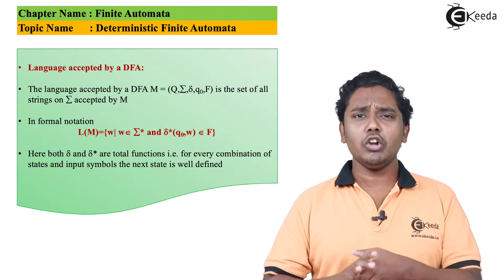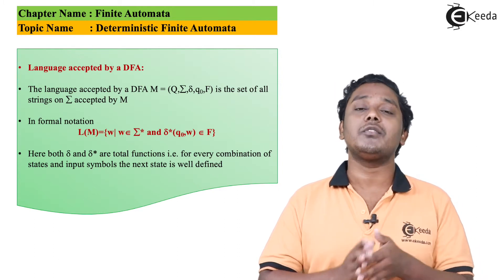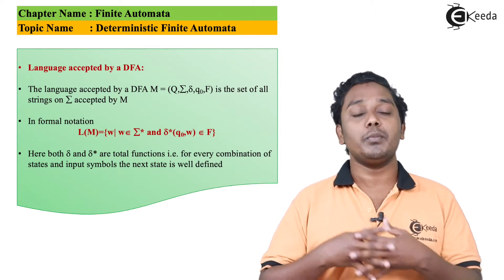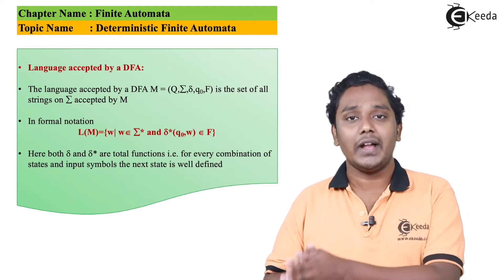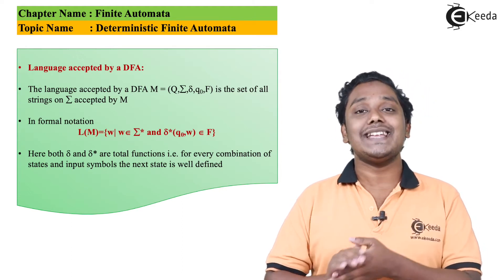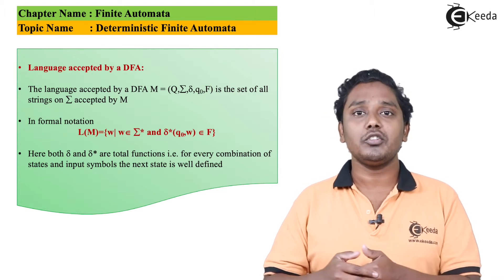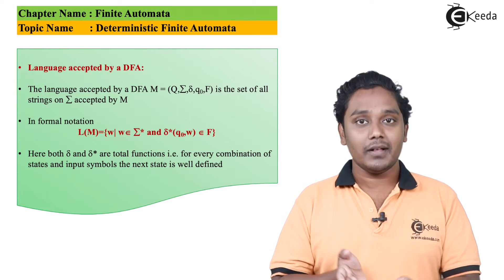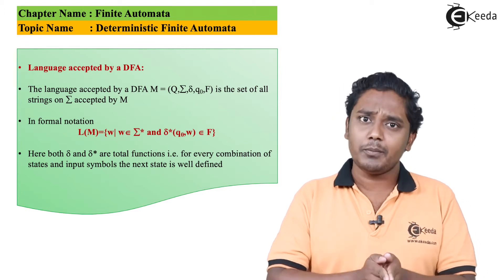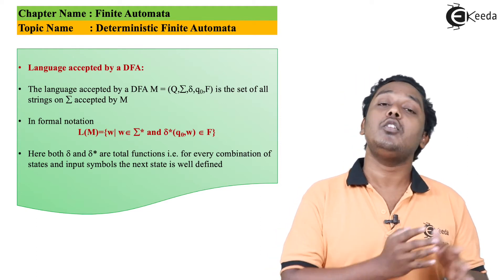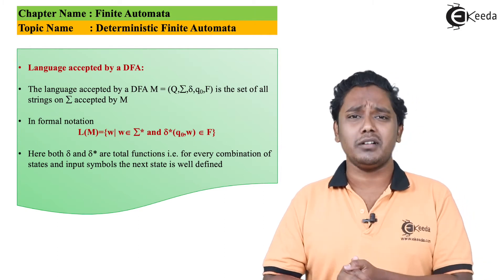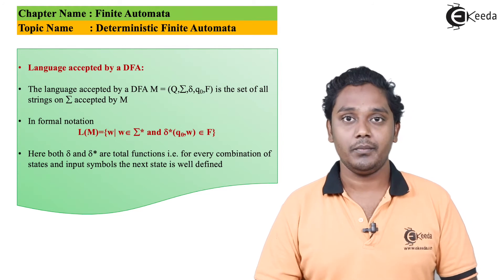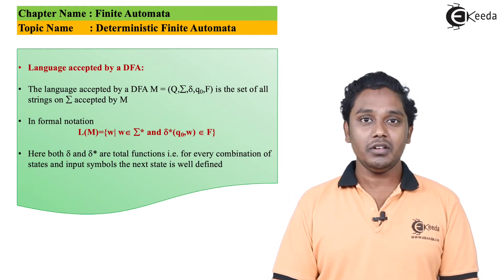There is also something called the language associated with a DFA. The DFA takes a number of symbols, processes them, and at the end you get either a final state or a non-final state. If your string ends at a final state, that string is accepted by the automata; if it ends at a non-final state, it is rejected. The set of all strings accepted by a DFA is called the language accepted by that DFA. You can see the more formal mathematical definition in the presentation.